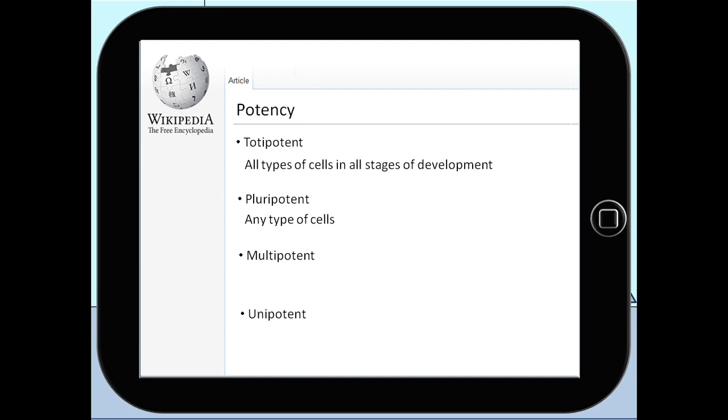Pluripotent stem cells can differentiate into almost all types of cells that exist in the body, like muscle, nerve or skin cells. The only exceptions are the cells that form the umbilical cord and the placenta.